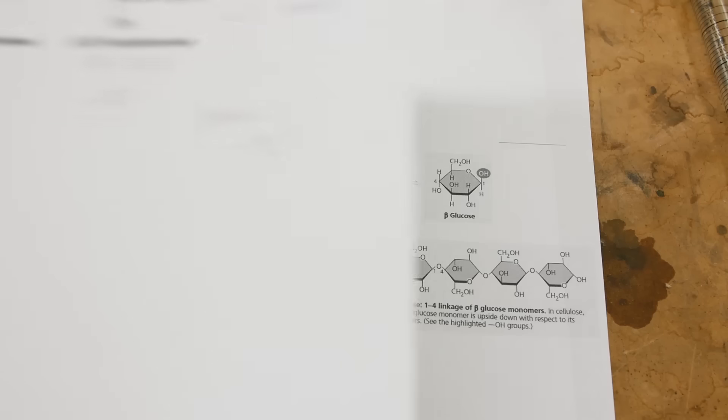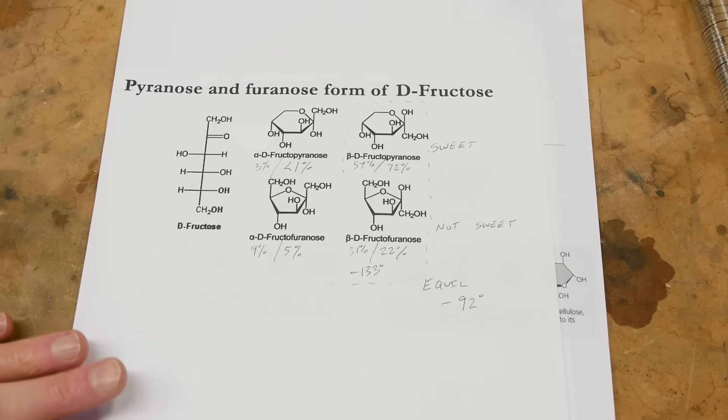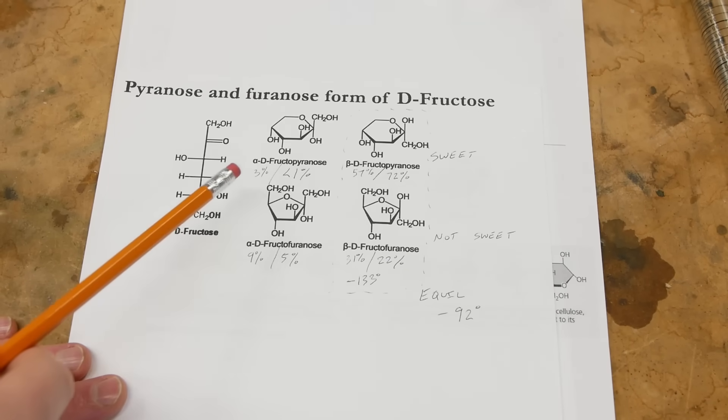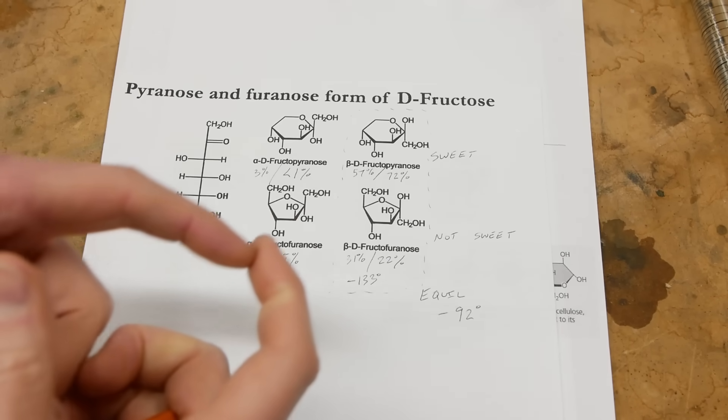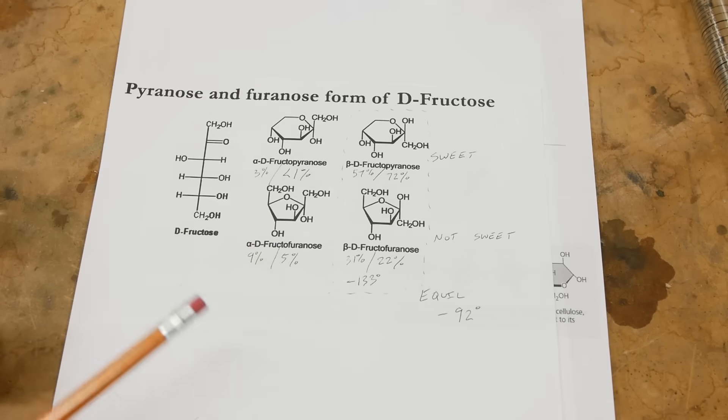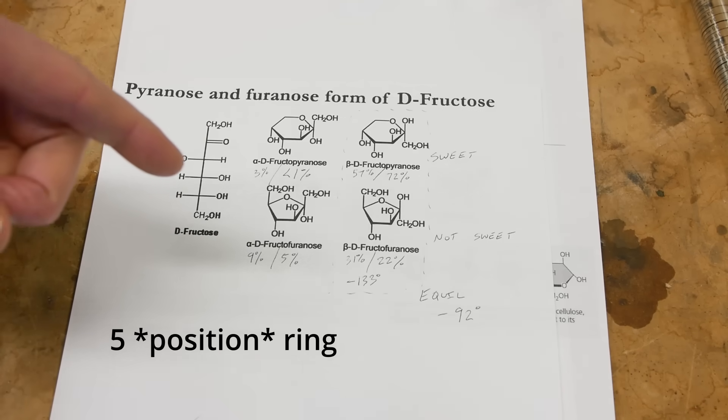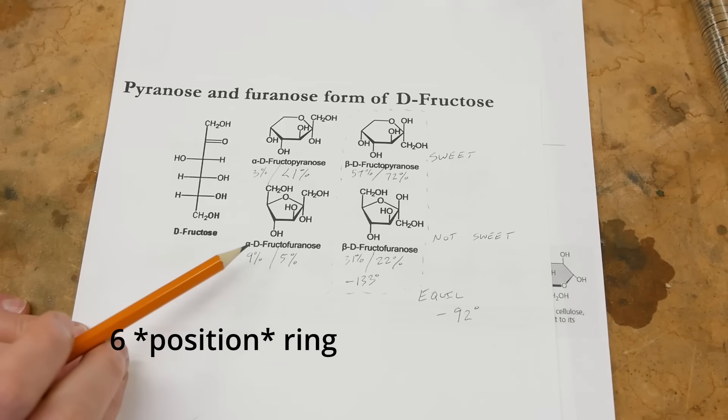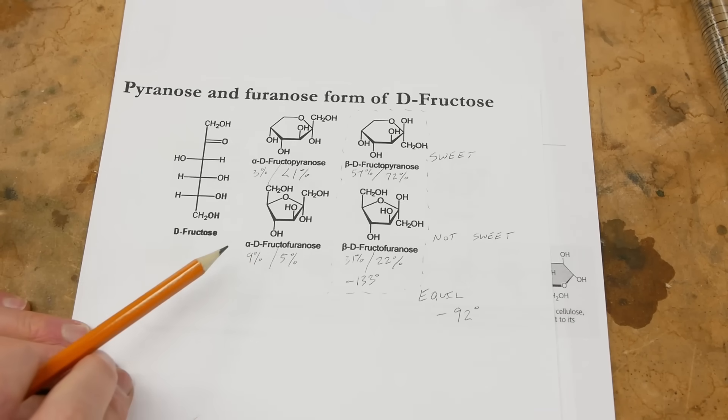Now, if you think that's wild, fructose is even more complicated. In this case, not only are there alpha and beta forms, but when I was talking about the ring kind of opening and closing with fructose, sometimes the ring opens and closes to make a five carbon ring with one carbon hanging off. And sometimes it closes to make a six carbon ring. And those two forms are called the furanose and the pyranose forms. And each one of those has an alpha and a beta.